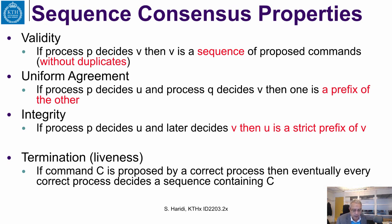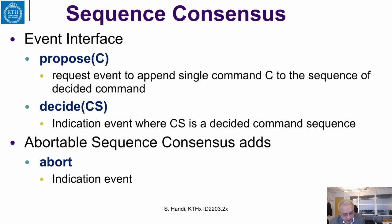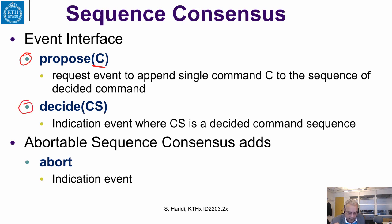This is the specification of sequence consensus. What is our interface when we define such a component or module? Processes propose commands — C is a command, and it is a request event to append a single command C to the sequence of decided commands. Processes decide on sequences, so there is an indication event where C is the current decided command sequence. If we are going to have abortable sequence consensus, we add an abort indication event.